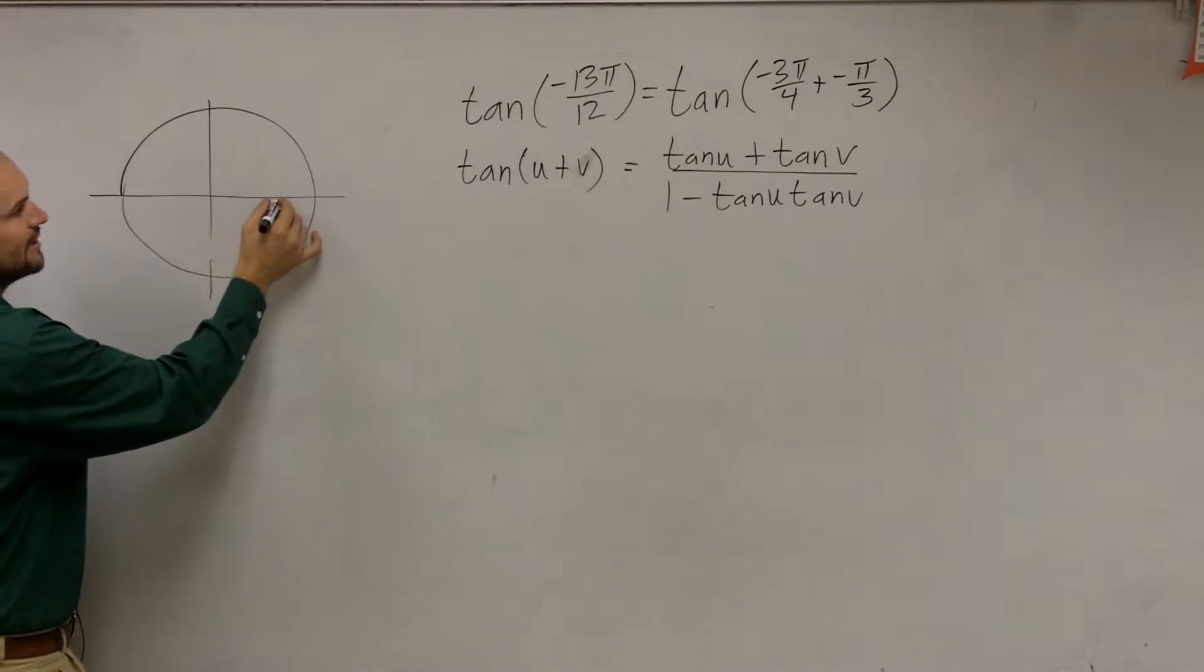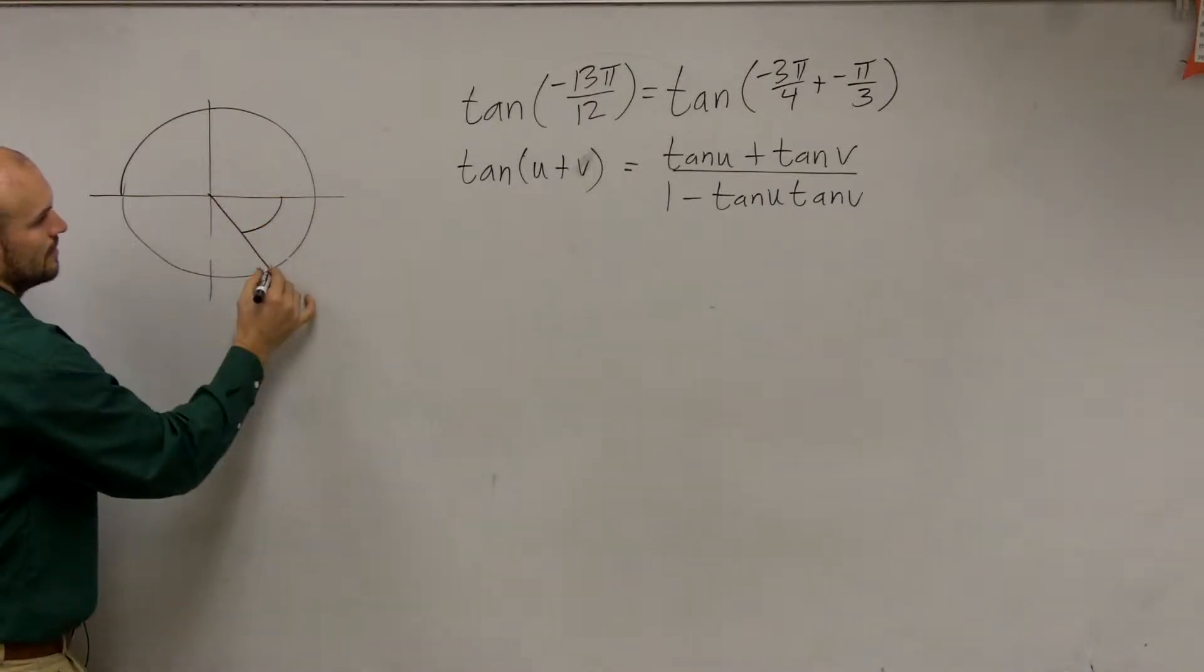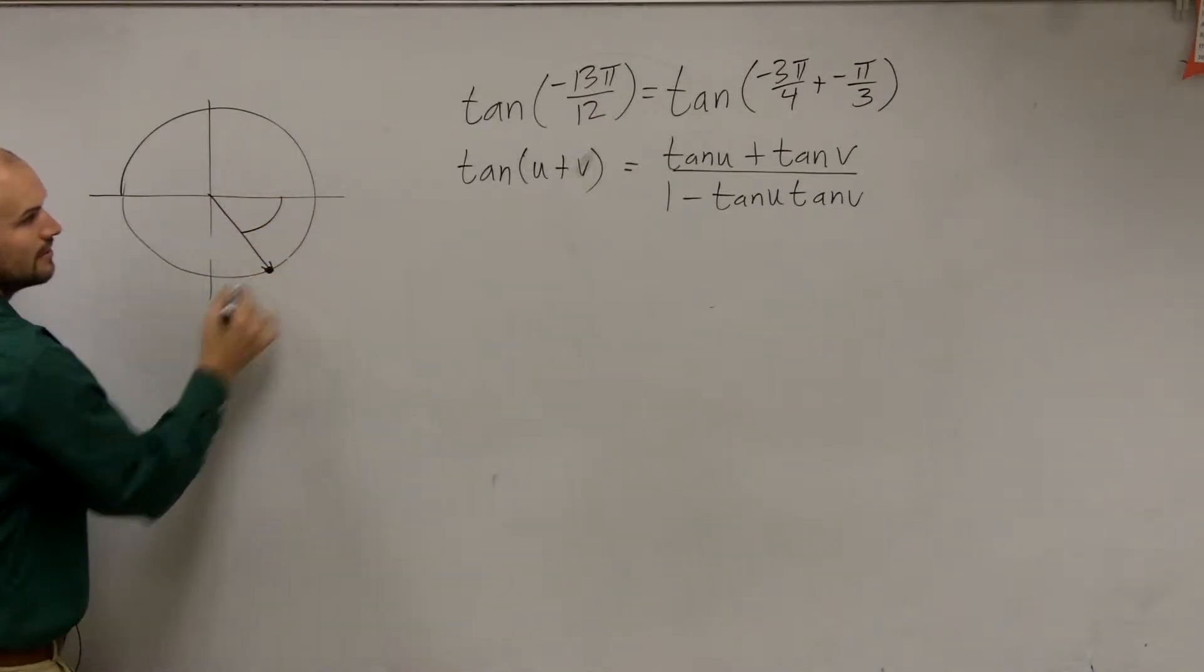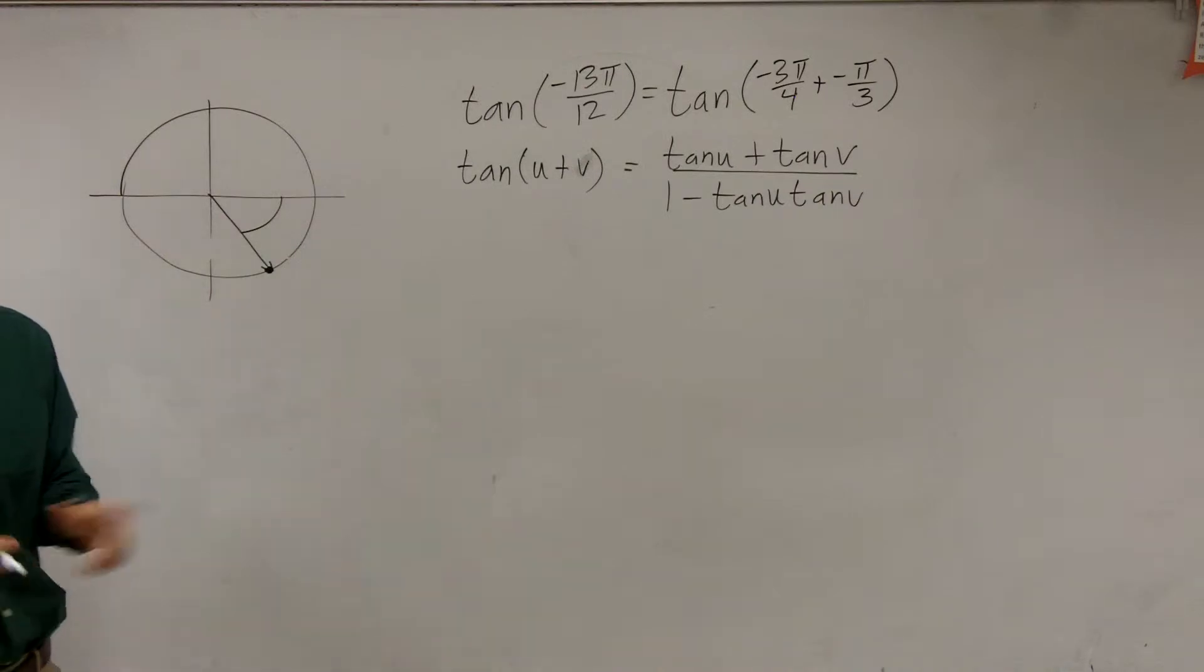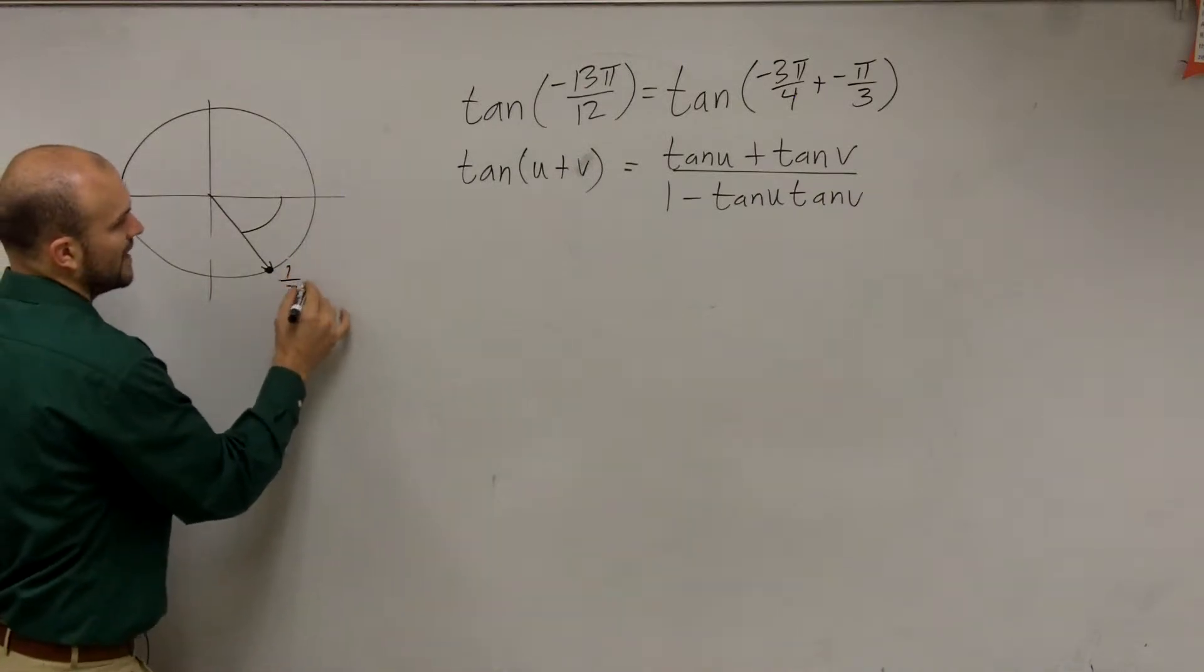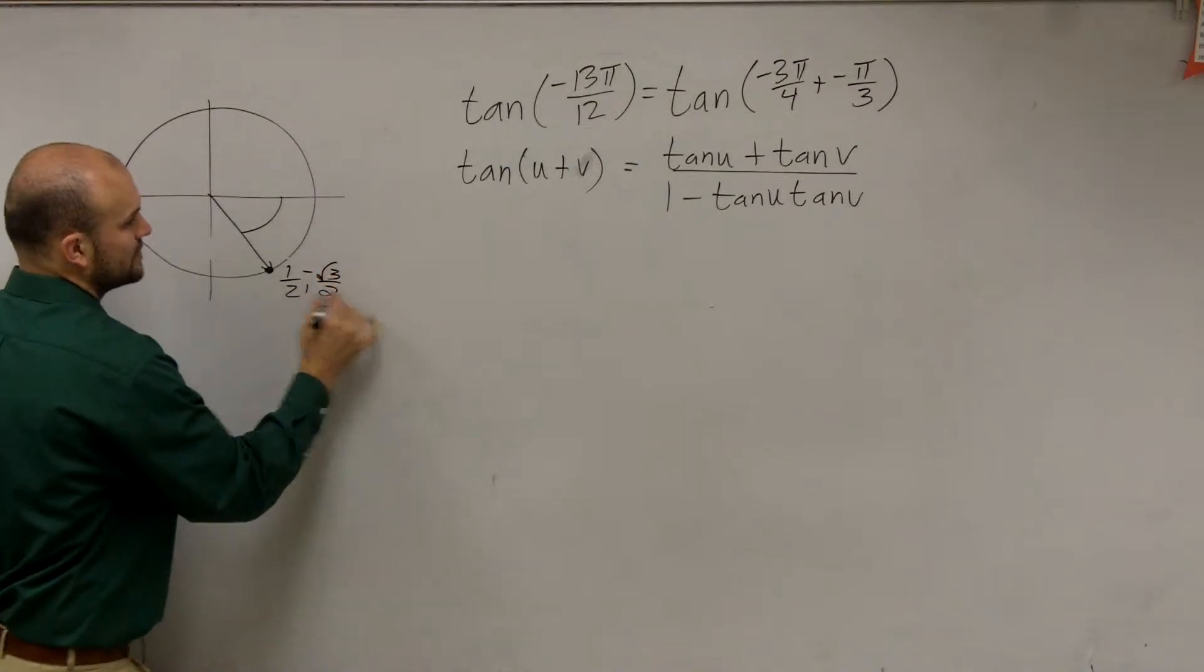Negative π over 3 is going to be right here, and we're going to have a positive 1/2 comma negative square root of 3 over 2.